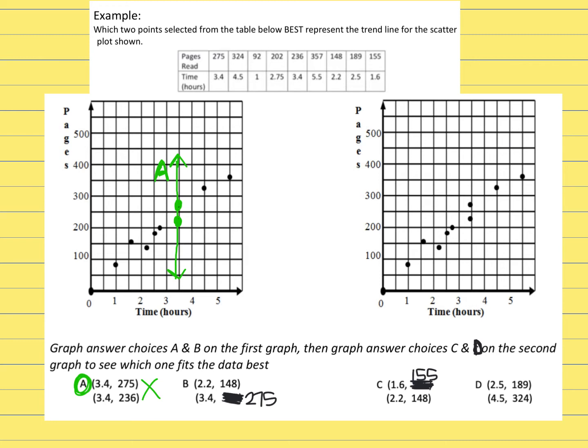I'm going to choose another color for answer choice B just so I can see the differences real good. The first point says 2.2 and 148. I'm going to come over to 2 a little bit past and then up right below 150. So I'm going to make that dot pink.